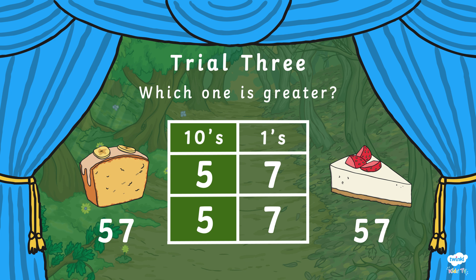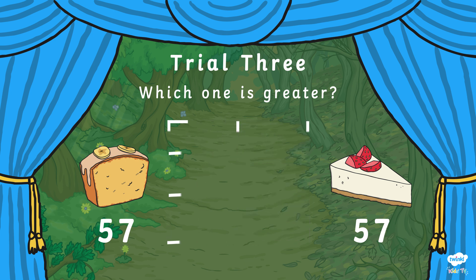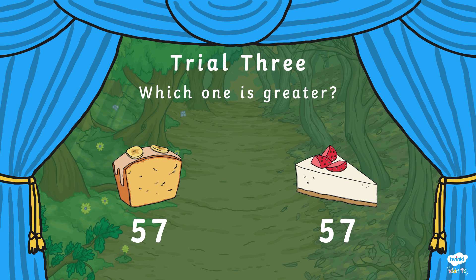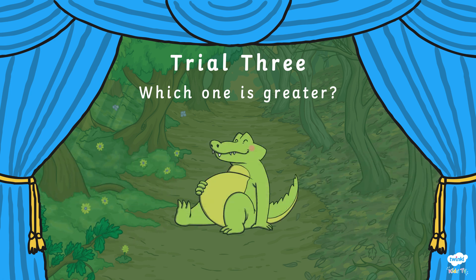First, we look at the tens column. They're both the same amount, so we need to move over to the right-hand side and look at our ones column. We have the number 7 and the number 7. Which number is greater? They are both the same! This tells us that 57 is equal to 57. What symbol should we use to show the numbers are equal? That's right! Remember that the crocodile only eats the greater number, but in this case they are the same, so Crock-8 can eat both cakes.